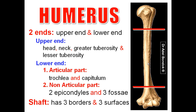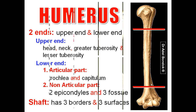Regarding the shaft, it has three borders and three surfaces: anterior border, medial border, and lateral border. The lower part of the medial border is called the medial supracondylar ridge. The lower part of the lateral border is called the lateral supracondylar ridge. The three surfaces are anteromedial, anterolateral, and the posterior surface.